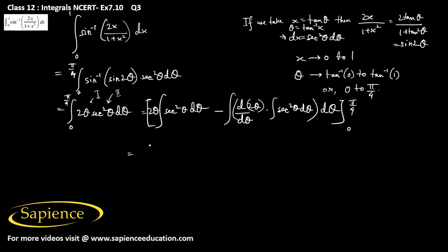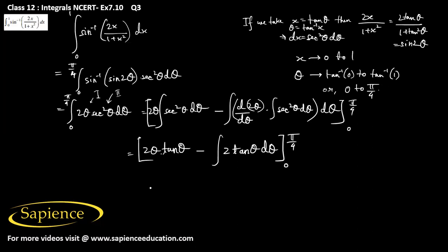This gives 2θ · tan θ minus ∫2 · tan θ dθ, evaluated from 0 to π/4. Since ∫tan θ dθ = log|sec θ|, this becomes 2θ · tan θ minus 2 · log|sec θ|, from 0 to π/4.